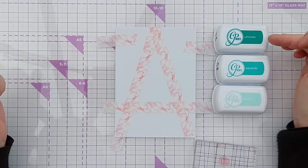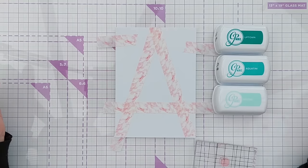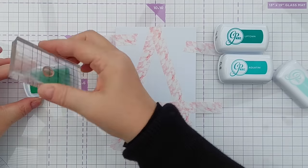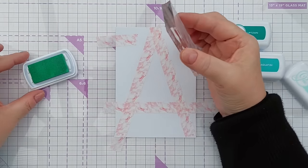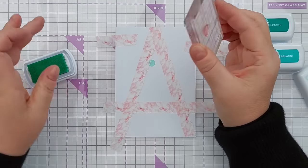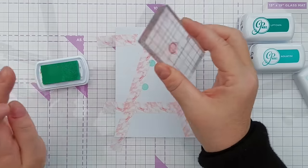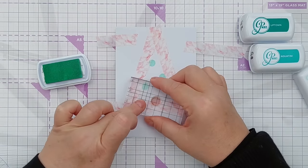I think these are all party ones, the bright ones. We've got Uptown, Aquatini and Minted. I've got a circle stamp here which is a photopolymer so it should pick these up nicely and I'm just going to stamp these around the inside of my shape.